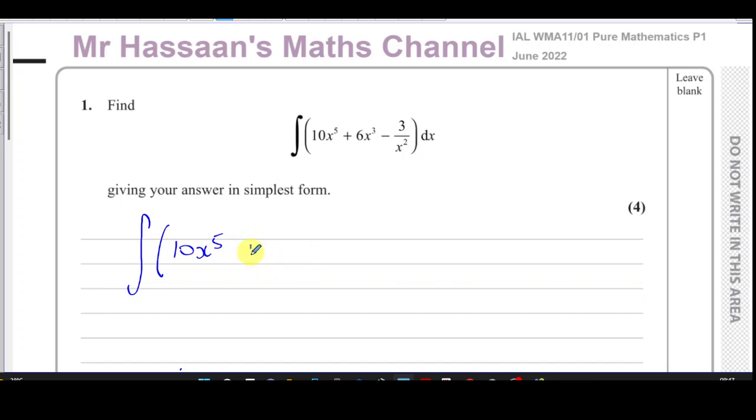Then I'm going to write this last term in index form with the x in the numerator. We'll use the law of indices that 1 over a to the power of n is the same as a to the power of negative n. That now has to be integrated with respect to x.